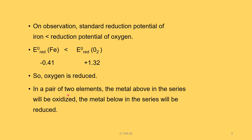In a pair of two elements, the metal above in the series will be oxidized; the metal below will be reduced. The standard reduction potential of iron (−0.41) is less than that of oxygen (+1.32), so iron is oxidized and oxygen is reduced.